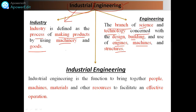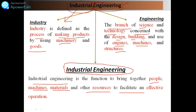Why we combine the terms industrial and engineering? Industrial engineering is the function to bring together people, industry machinery, machines, materials, and other resources to facilitate an effective operation. Industrial engineering is the function to bring together people, machines, materials, and other resources to facilitate effective operation.